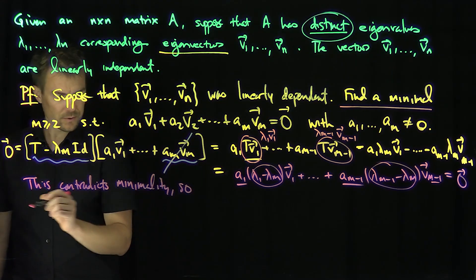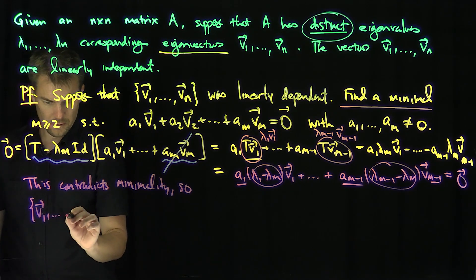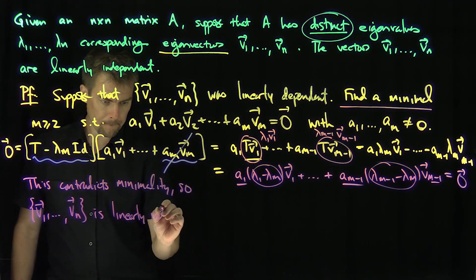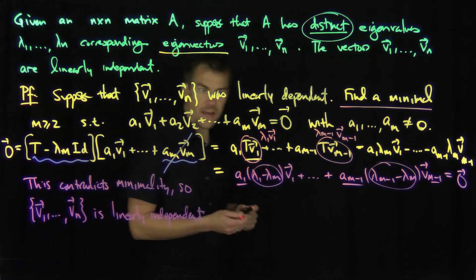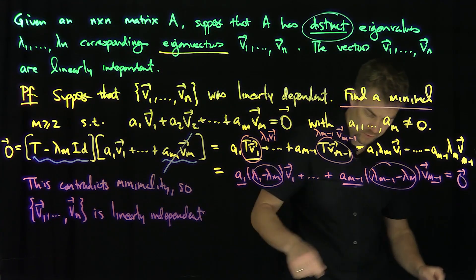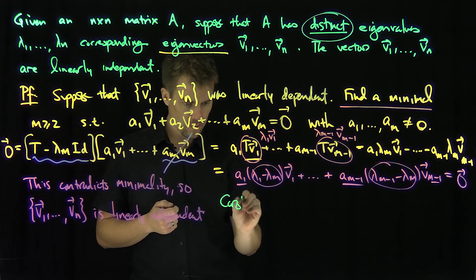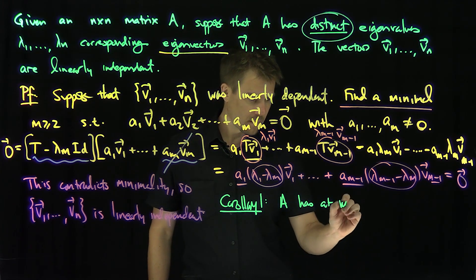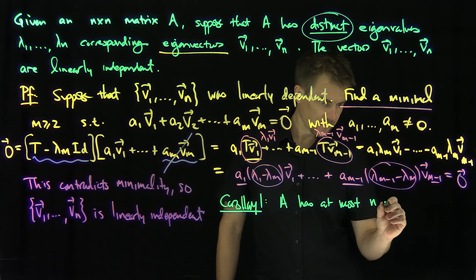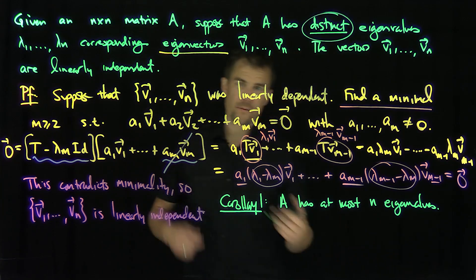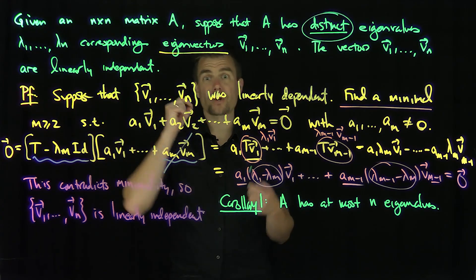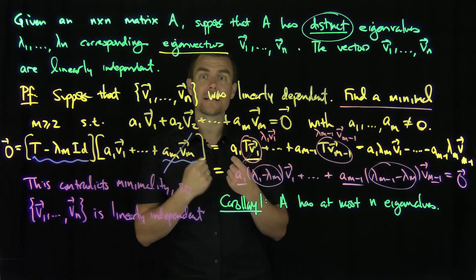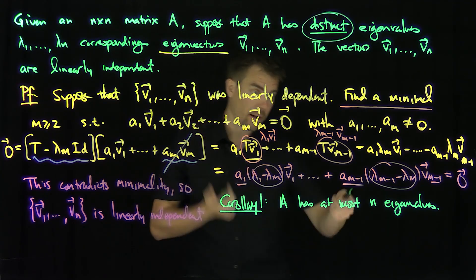So that says our assumption was false. The set v1 through vn — the eigenvectors corresponding to distinct eigenvalues — is linearly independent. We get two immediate corollaries. Corollary one is that A has at most n eigenvalues. Since it maps R^n to R^n, we can only have at most n linearly independent eigenvectors in R^n.